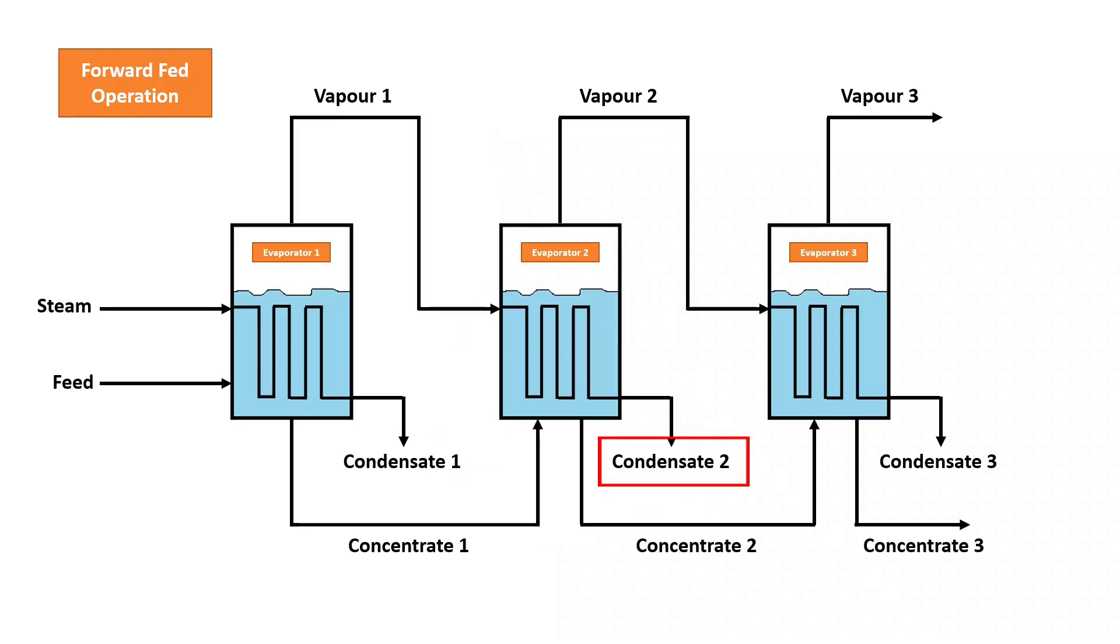Condensate leaves the second evaporator as the hot vapors in the metal tubes condense, and the concentrated product from evaporator 2 is used as the feed solution in evaporator 3, which then heats up and vaporizes to form more vapor. Condensate is also formed as the hot vapor condenses through the metal tubes. The final concentrated product from the final effect is then passed out of the evaporator.